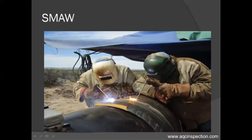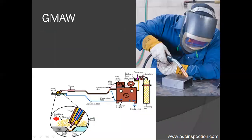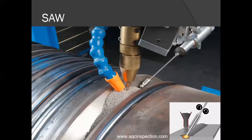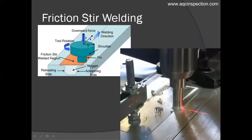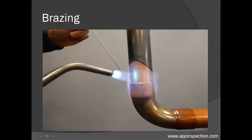The various welding processes include: Shielded Metal Arc Welding, Gas Tungsten Arc Welding, Gas Metal Arc Welding, Flux Core Arc Welding, Submerged Arc Welding, Electric Resistance Welding, Friction Stir Welding, Oxy Fuel Gas Welding, and Brazing.